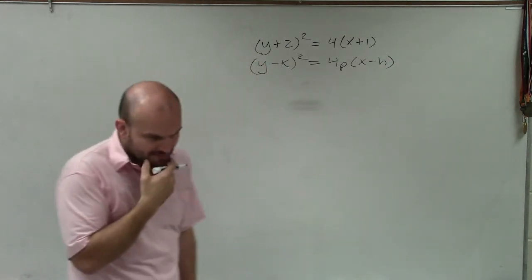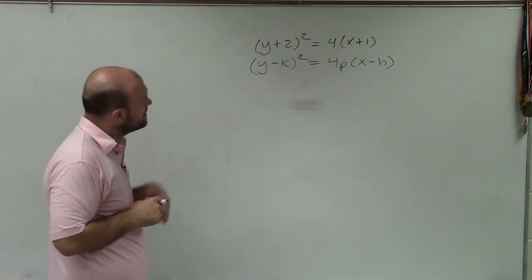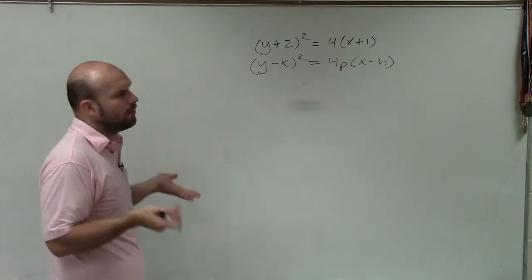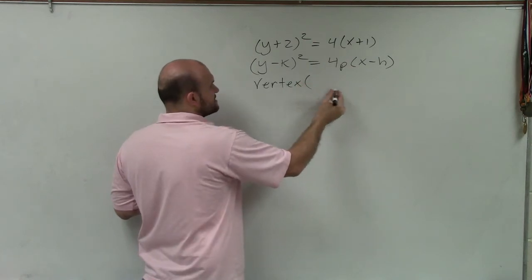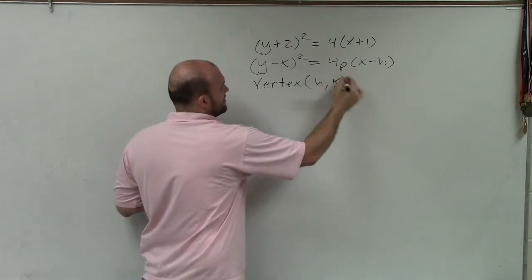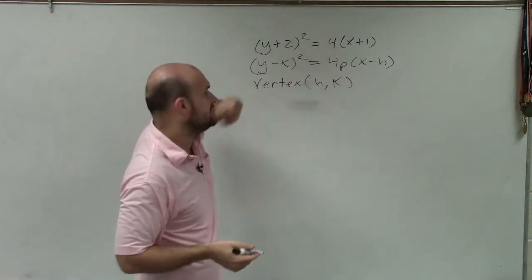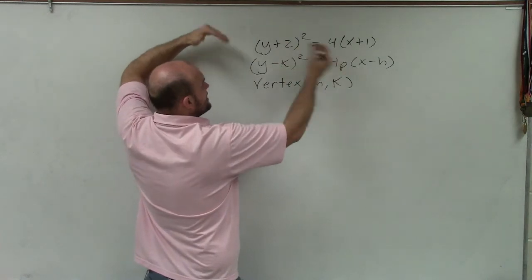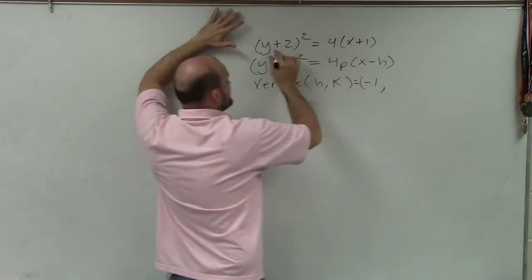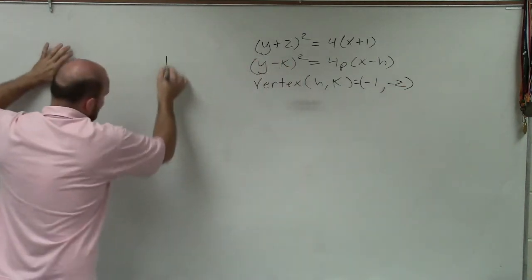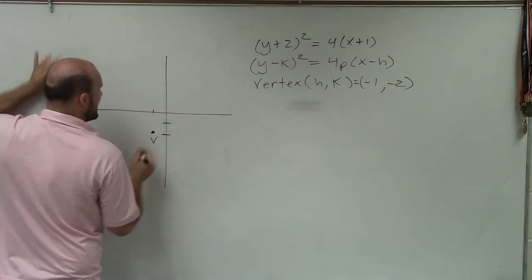When looking at this problem, what we want to be able to do is identify what is h and k. Well, h and k represents our vertex at h comma k, where h represents the x-coordinate and k represents the y-coordinate. In this case, it's the opposite of the signs we see: opposite of positive 1 is negative 1, opposite of positive 2 is negative 2. So by graphing this, I can plot my vertex at negative 1, negative 2. That's your vertex.